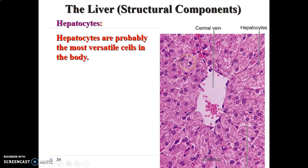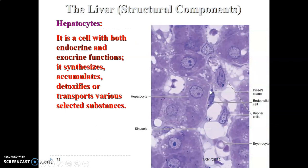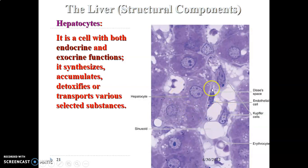Hepatocytes are actually the most versatile cells in the body. As you can see in this image, this is the central vein, with hepatocytes radiating away from it, and in between you have sinusoids lined by endothelium. The hepatocytes have both endocrine and exocrine function. They are able to synthesize proteins and cholesterol, detoxify drugs and steroids, and help to transport various selected substances. This image shows a hepatocyte separated from sinusoids by the Space of Disse, with endothelial cells lining the sinusoids. Note the presence of Kupffer cells, which are members of the monocytic phagocytic system that play an immune role.